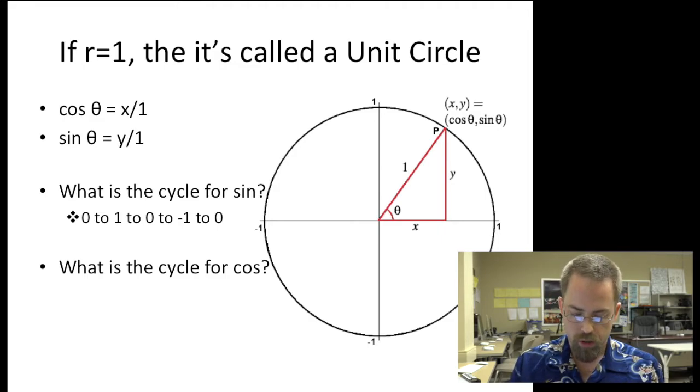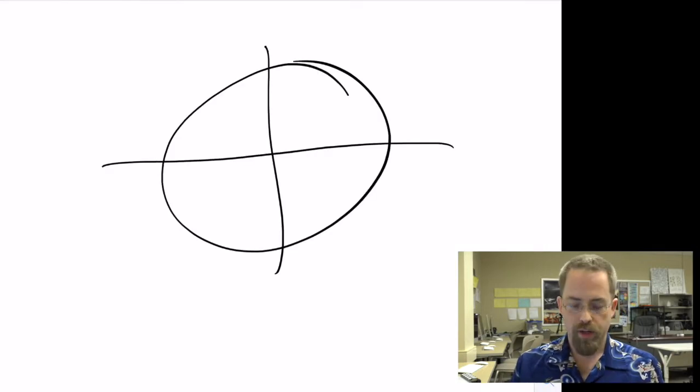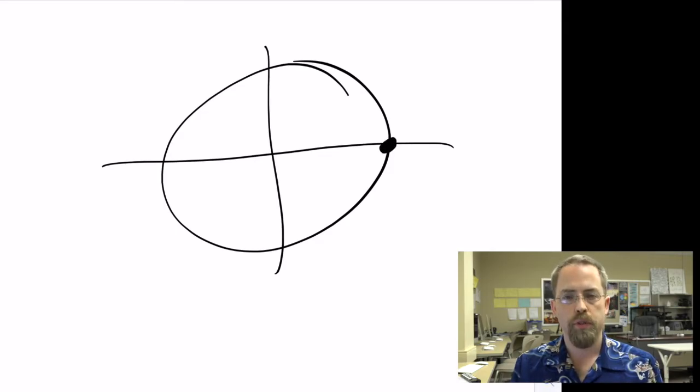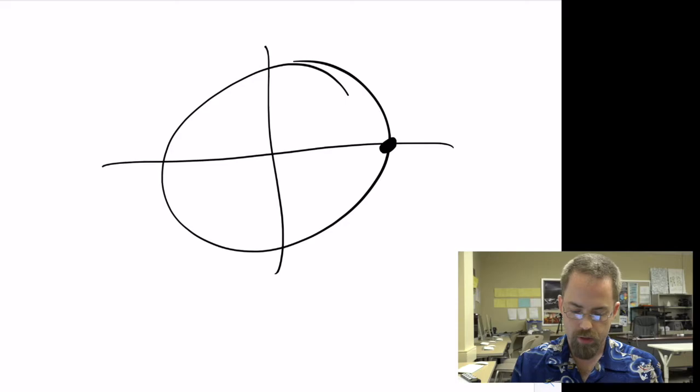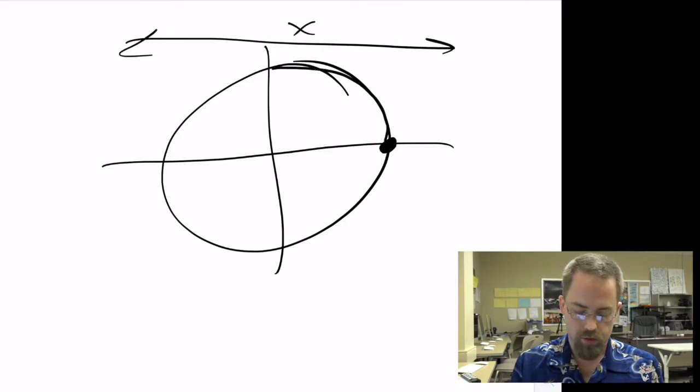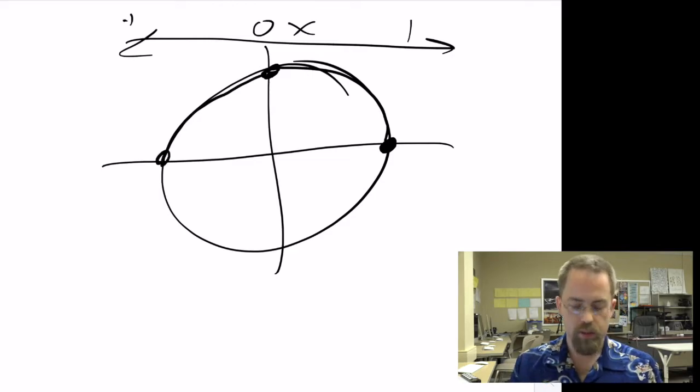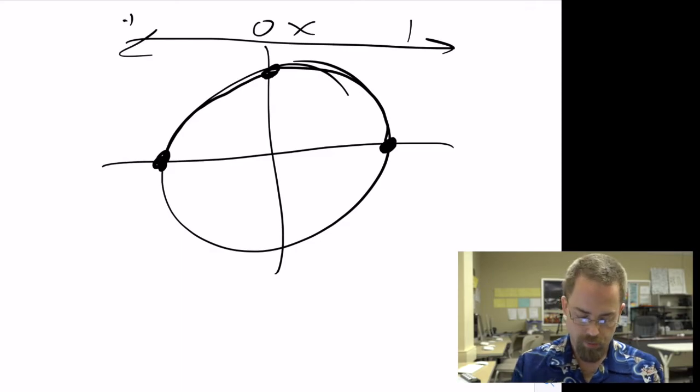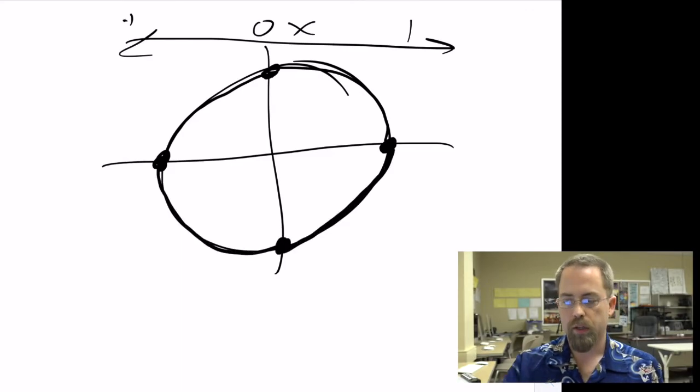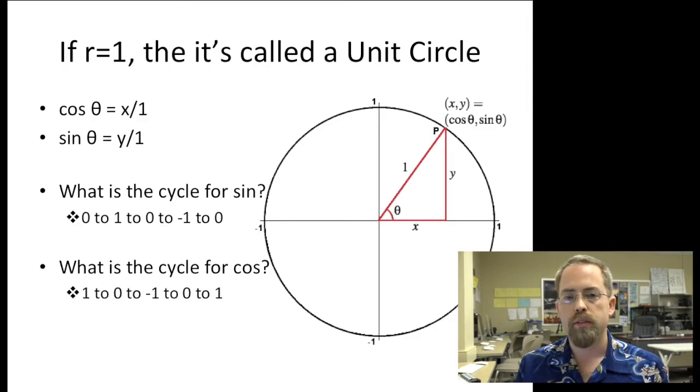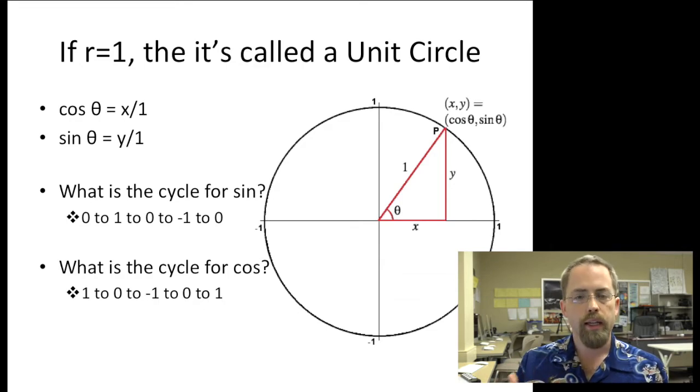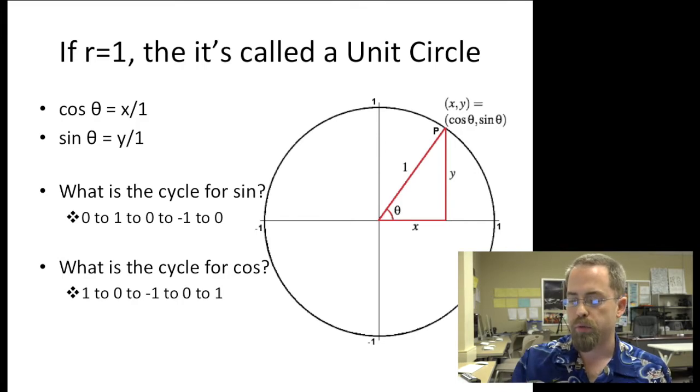What about for cosine? What about if we try to say what's happening to our x value? Well, the x value starts all the way at its most extreme point, at 1. And then, if we're just looking at x, it's going to fall down to 0 there. And then, it's going to fall even further down to negative 1. And then, it'll come back up to 0 and back up to 1. So this pattern, this cycle of what does cosine do, it's the same numbers, 1, 0, negative 1, 0, as sine, but they start in a different spot. They start and finish in different spots, progressing through these numbers.